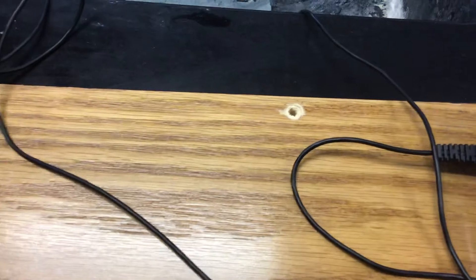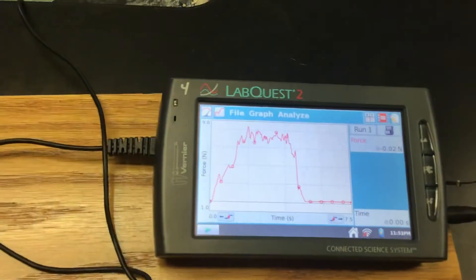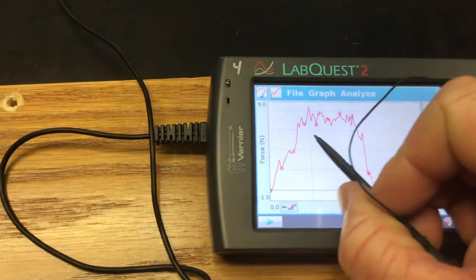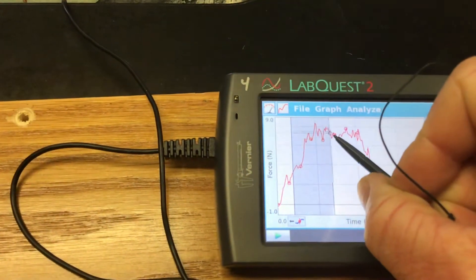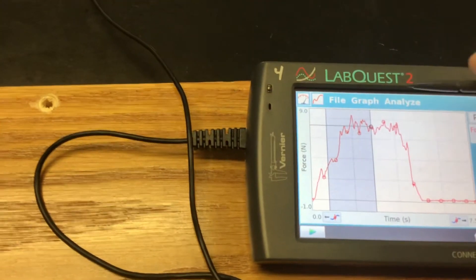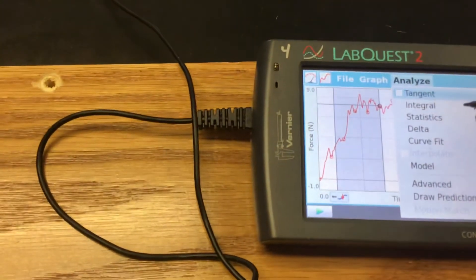The next thing you will do is analyze your data. To analyze the data, we first want to highlight the section of the graph that we want to analyze. So I want to analyze this first part of the graph because that's the force that it took to get this thing to move.